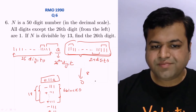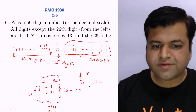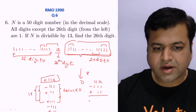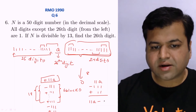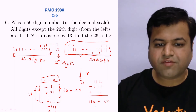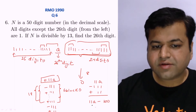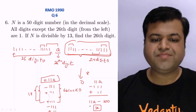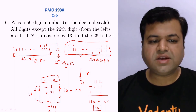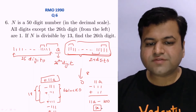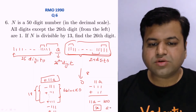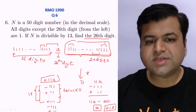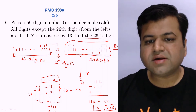The final alternating sum works out to 11A (the three-digit block 1,1,A read as a number) minus 111 plus 11, which simplifies to 11A - 100 = (1)(A), the two-digit number 1A. For 1A to be divisible by 13, A must equal 3, since 13 is divisible by 13. Therefore the 26th digit is 3.